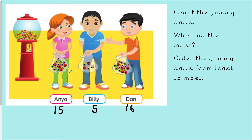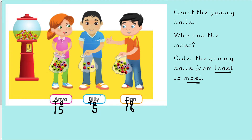Now it's asking who has the most gummy balls, and I need to order the gummy balls from least to most. To do this we are going to take a closer look at the numbers and compare them. In the number 15 we have 1 ten and 5 ones. In the number 5 we have no tens but 5 ones. In the number 16 we have 1 ten and 6 ones. The number 15 and 16 both have 1 ten; the number 5 has no tens, just 5 ones — so our smallest number is 5.